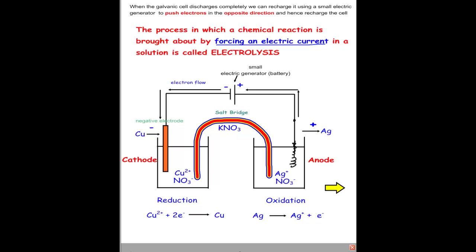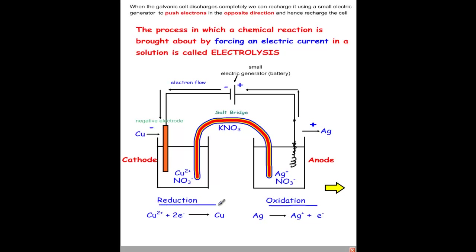Electrolysis is the process in which a chemical reaction is brought about by forcing an electric current through a solution. Looking at the diagram from the previous video, we have copper ions in solution gaining two electrons and producing copper. This is the reduction process, while on the other side oxidation occurs — the silver electrode produces silver ions and one electron, so current flows in that direction.